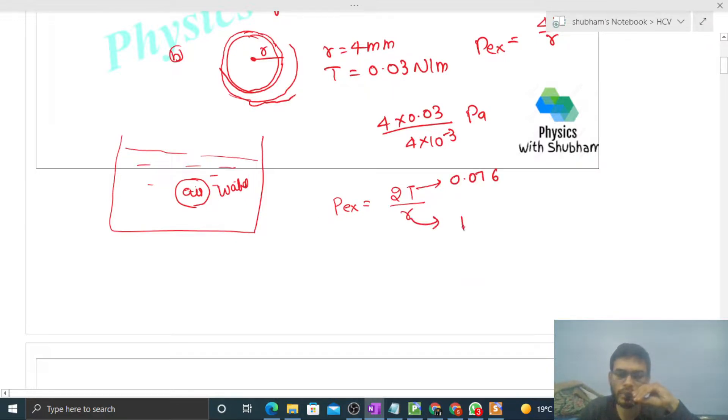And this air bubble's radius is 4 mm, that is 4 into 10 raised to the power minus 3. So just put the values and find out the numerical value. This will be in Pascal.